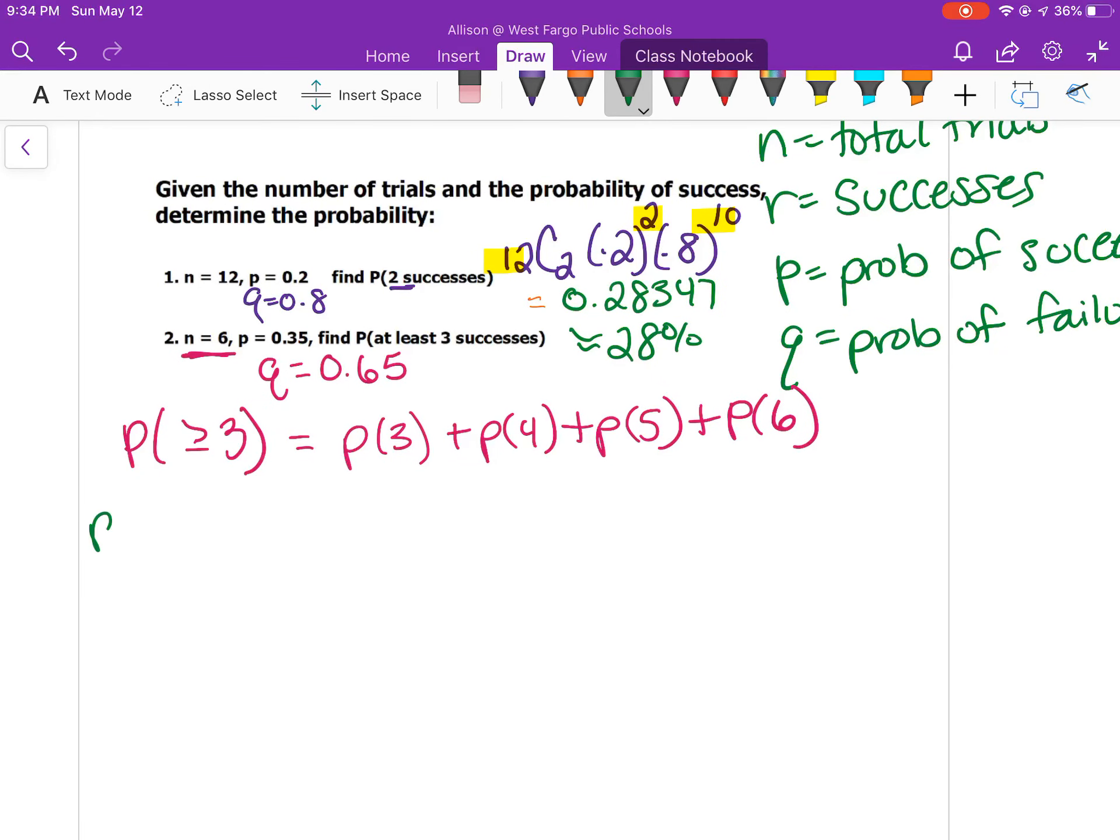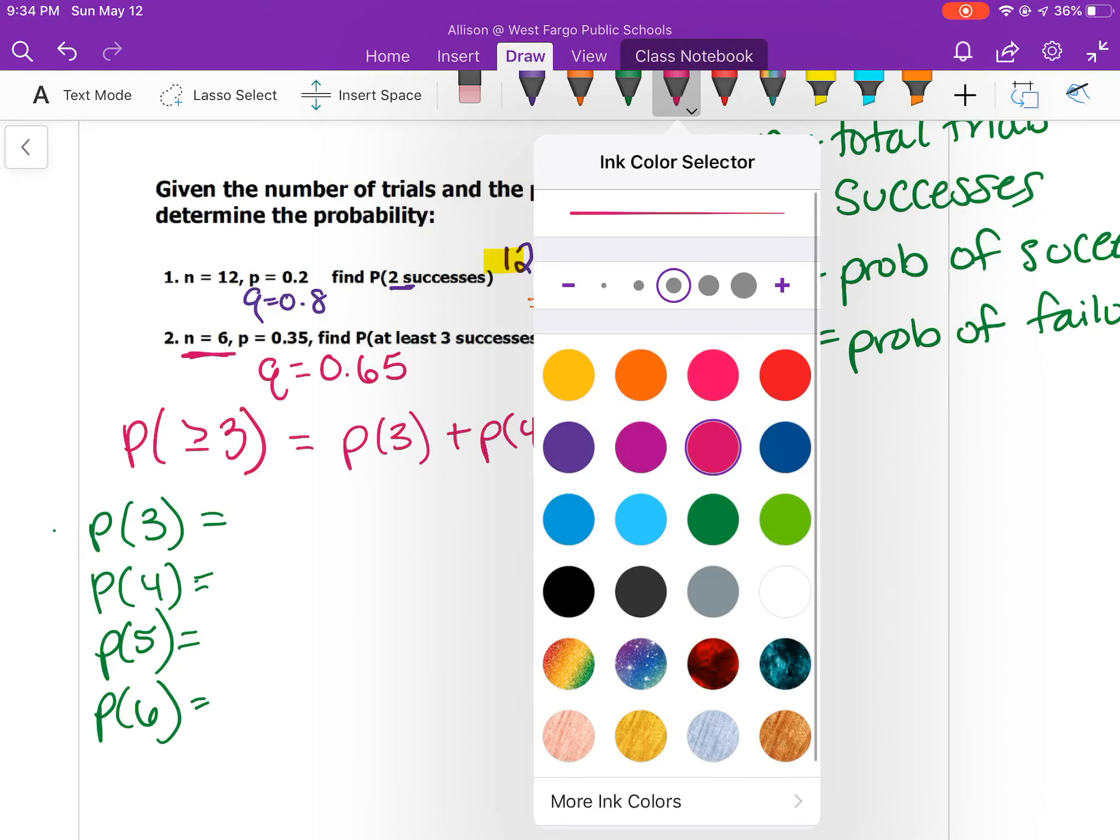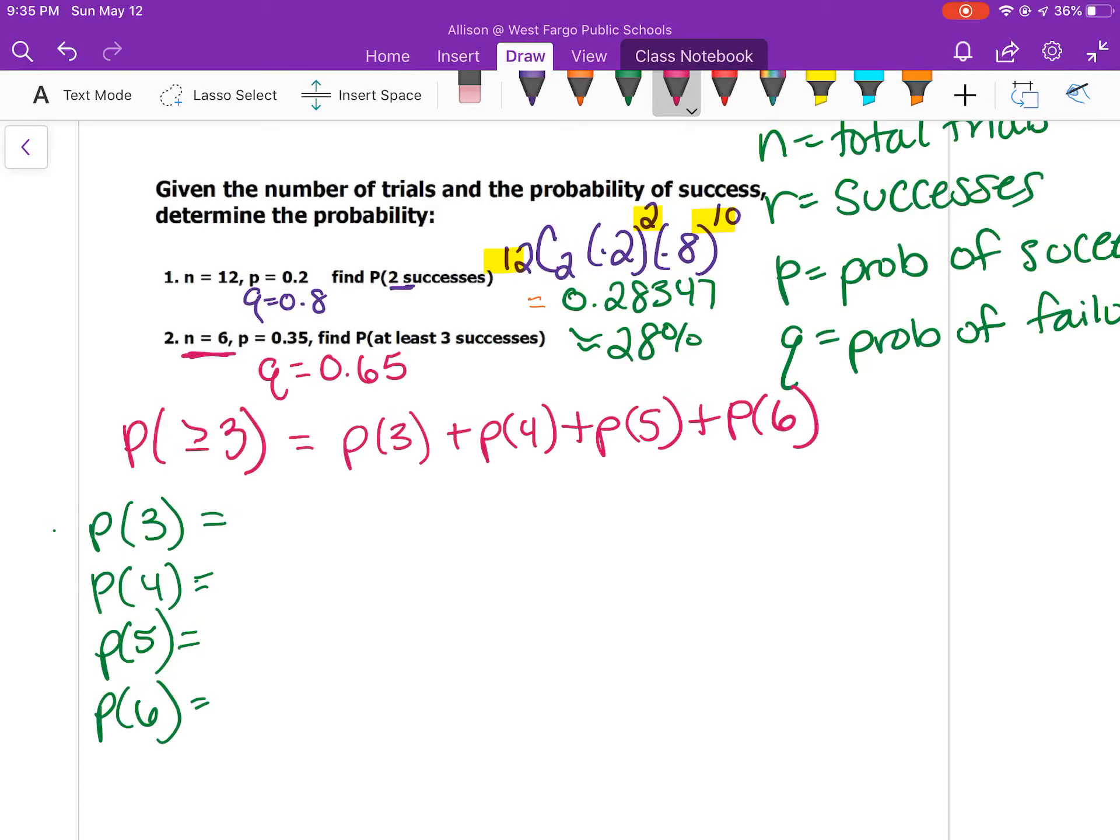I would find the probability of three successes, then four, then five, then six, and then you get each of these decimals and add them up. My equation for probability of three successes would be 6 choose 3, 0.35 to the third power for three successes, 0.65 to the third power. If I have three successes, I'll have three failures too. In the calculator I got 0.23549.